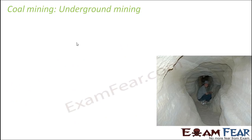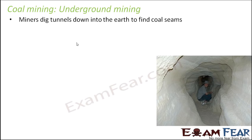Starting with underground mining — miners dig tunnels down into the earth to find coal seams. Since the coal is deep under the ground, a tunnel is constructed going deep into the earth until coal deposits are found. Coal deposits are found only at specific locations where the probability of finding them is more, and that is where these tunnels are dug. Since the tunnels are dug underground, this method is known as underground mining.